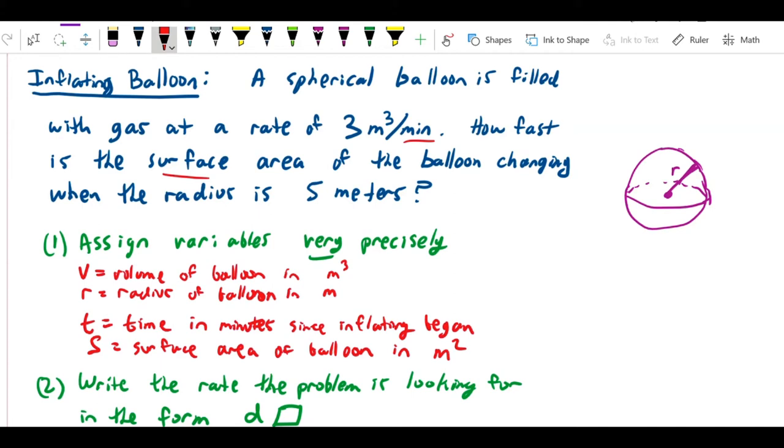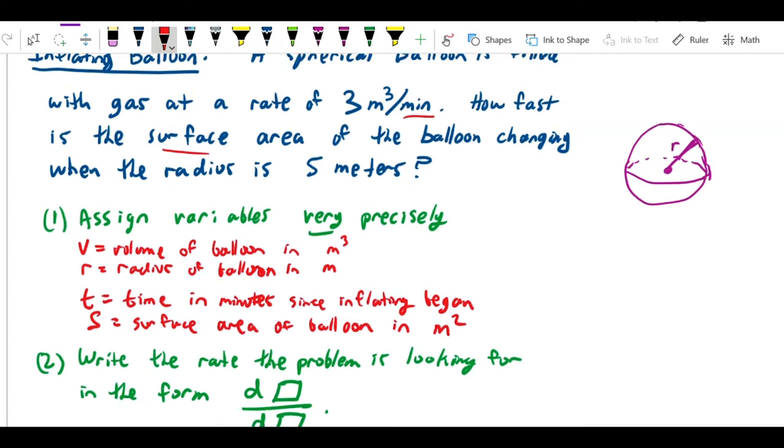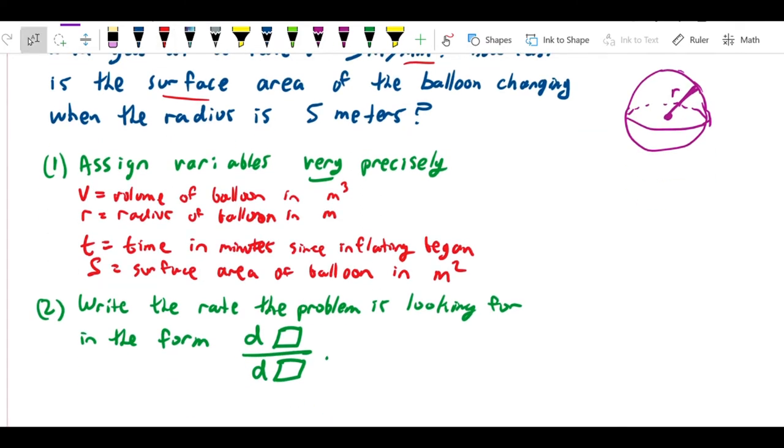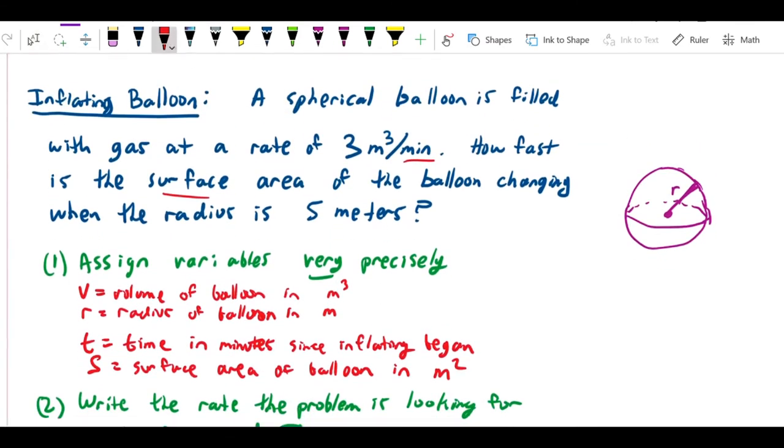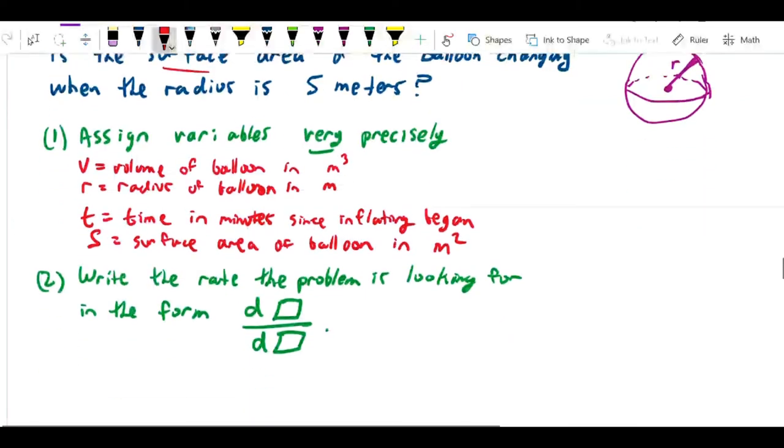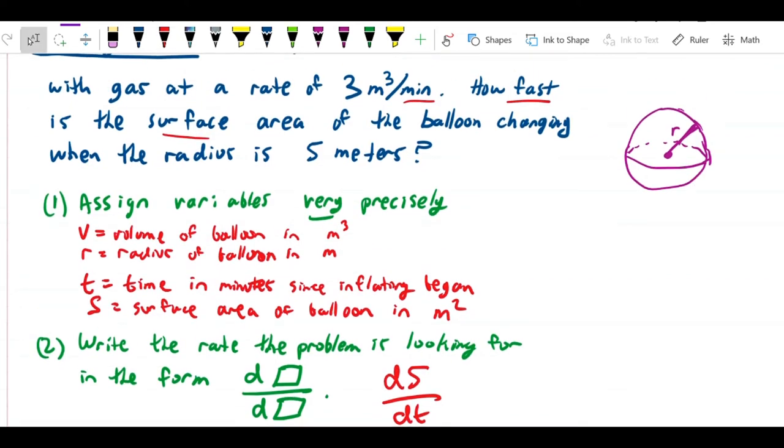What rate is the problem looking for in the form of d something over d something? The question is, how fast is the surface area changing at a particular time? In other words, we're asking how fast S is changing for every given unit that time changes. As time moves forward, at what rate is the area changing? This is going to be the change in surface area per change in time, dS/dt. That's the question.